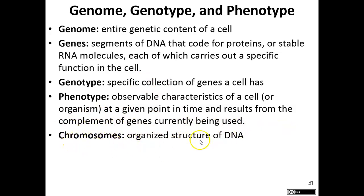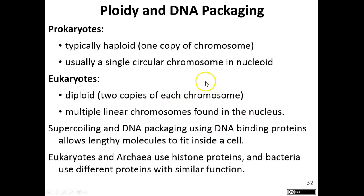Chromosomes are the organized structure of DNA — when DNA is packed together it forms a chromosome. In its loose form where it can produce proteins, it's called chromatin. Prokaryotic organisms are typically haploid, meaning they have one chromosome. All bacteria generally have a single chromosome that they express.